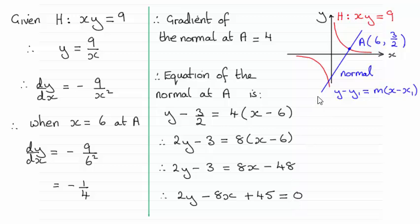Being a straight line, remember it's going to have this form: y minus y1 equals m bracket x minus x1. x1, y1 is a point on that normal, so x1 is 6, y1 will be 3 over 2. We just need the gradient m.